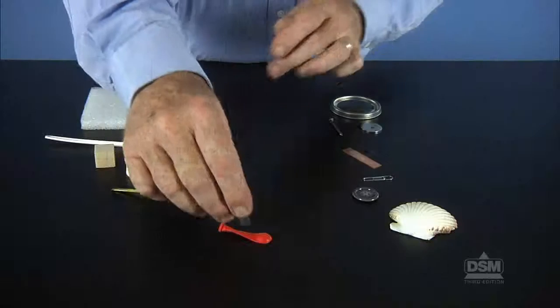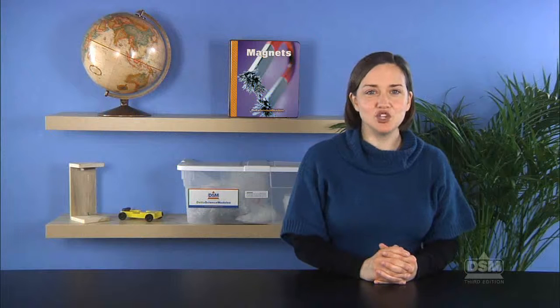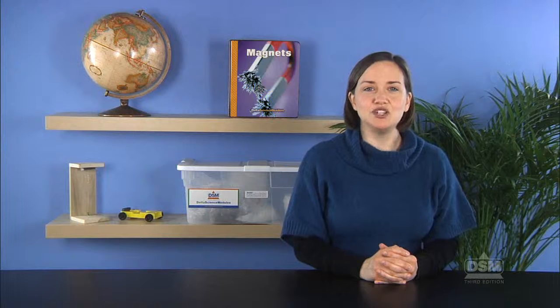Then, instruct teams to test each of the objects and put a check mark in the appropriate column on Activity Sheet 1. As the students are working, walk from team to team to make sure they share investigative tasks. Each student should have an opportunity to work with a magnet.